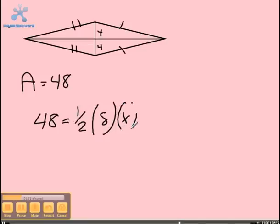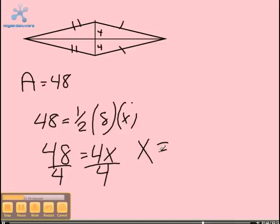You multiply the given information and end up with A equals a number X. You divide the given area by the number sitting next to X and that will be your answer. So your X will equal 12 feet.